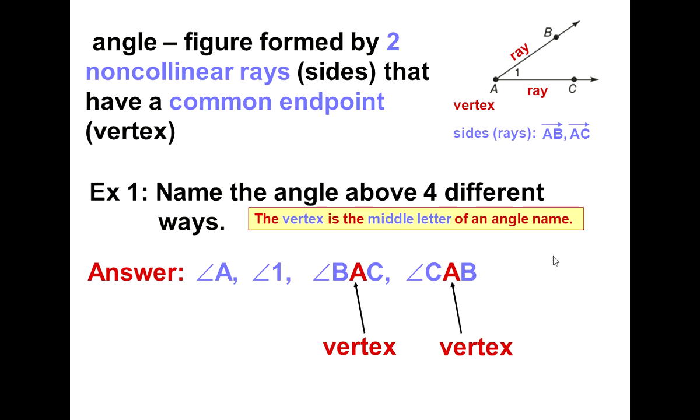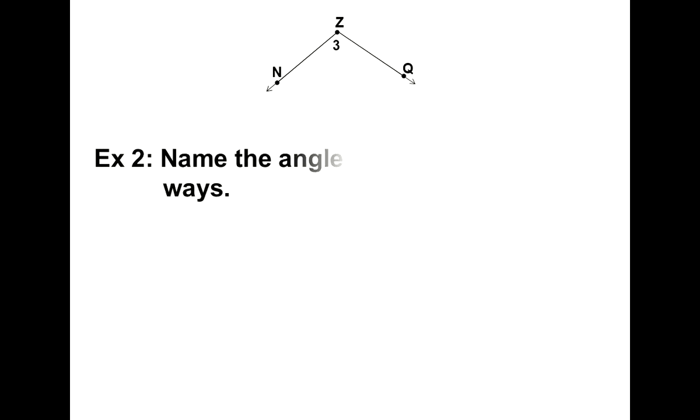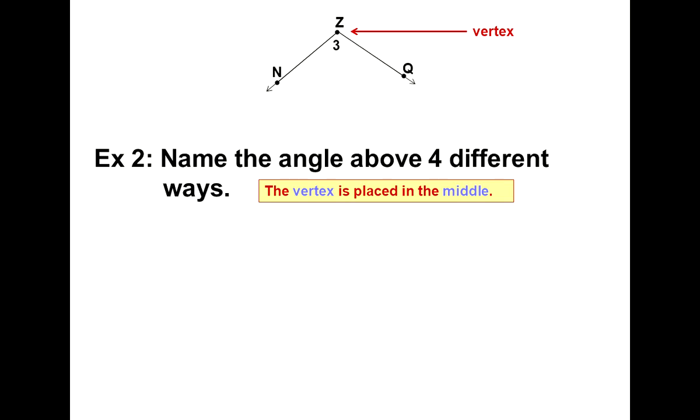We'll try naming angles one more time before we go to the angle addition. The vertex is point Z, which is used in the middle or used just to name the angle. Angle Z is one way. There's no degree symbol, plus this doesn't look like three degrees to me, so it's angle three. You can say this is angle NZQ or angle QZN, as long as your vertex Z is in the middle.